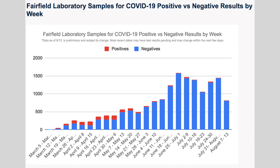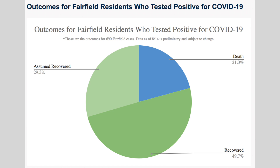Our next graph is also a little newer, probably out in May, and this is our positive and negative graph. This gives you an idea that as testing became more available to the general public, the number of positives did not necessarily increase along with that. We wanted to give an indication and watch the trends of where we are with positivity versus the number of tests being collected.